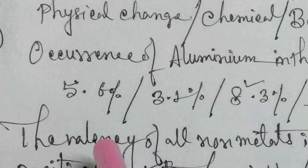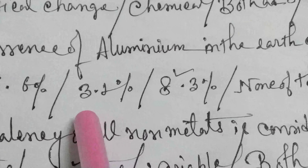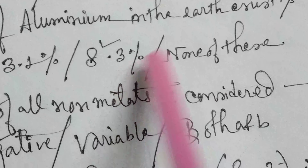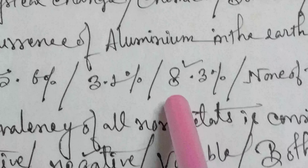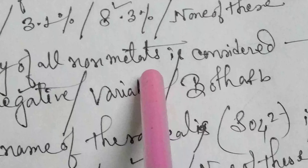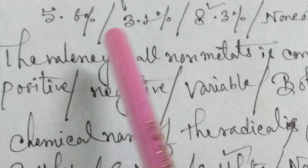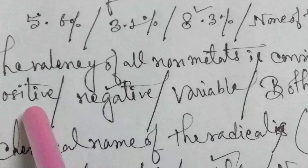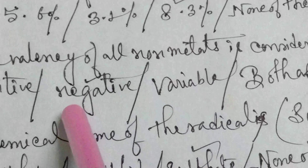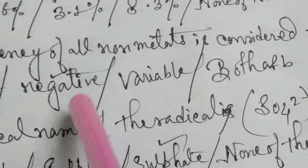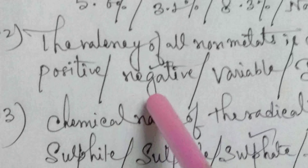The occurrence of aluminum in the earth's crust is: 5.6%, 3.1%, 8.3%, or none of these. The answer is 8.3%. The valency of all non-metals is considered: positive, negative, variable, or both A and B. In the case of valency, metals have positive valency and non-metals have negative valency. So the answer is negative.